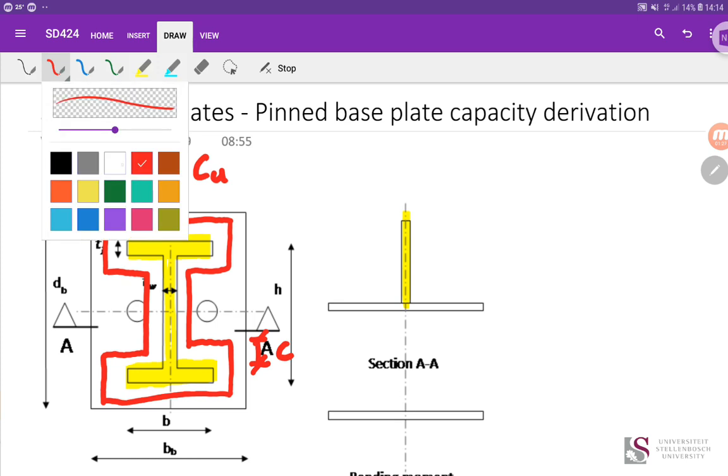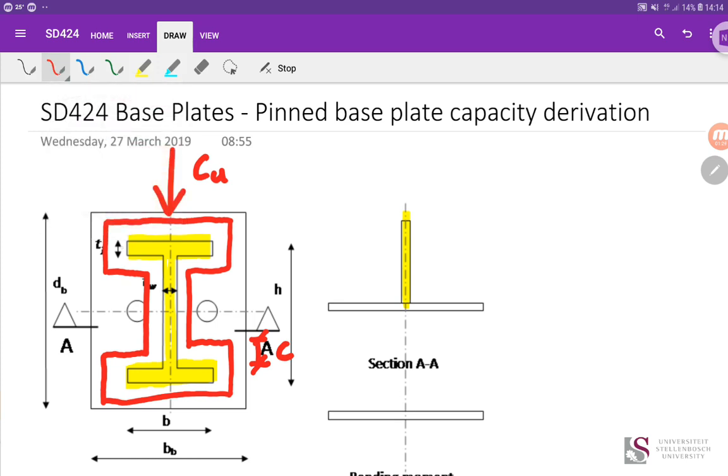So we are going to use that for our calculations and this hatched area here must be sufficiently large enough to carry the applied force Cu, the axial compressive load coming down the column. And we are going to start going through and deriving how do we find the value C because from C then we can determine our baseplate thickness.